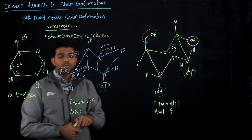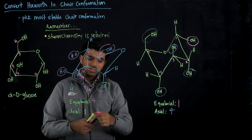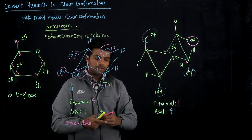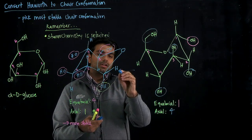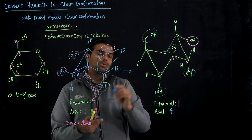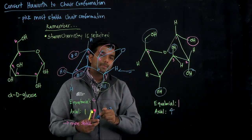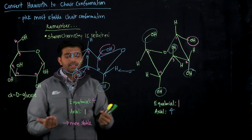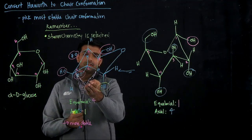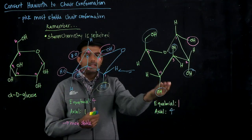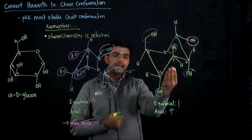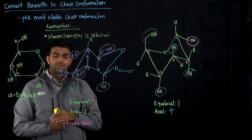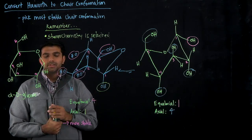Since the first chair conformation has four equatorial substituents, it's going to be the more stable one compared to the chair-chair flip. The equilibrium arrows would be pushed toward the first conformation more than the second. To summarize: when flipping chairs, substituents stay in the same up/down direction — the only thing that changes is axial becomes equatorial and equatorial becomes axial. The more stable conformation is the one with hydroxyl groups on the equatorial positioning, because it has less steric strain involved.